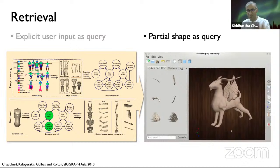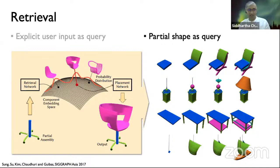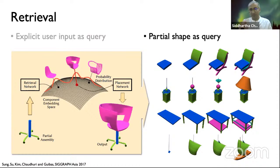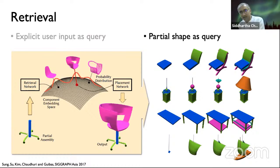In fairly recent work at SIGGRAPH Asia 2017, we took this one step further, working with a dataset where parts are not labeled. A neural network does part retrieval by taking a partial assembly as input — this retrieval network maps the partial assembly to a distribution over unlabeled parts in the collection, peaking at parts that are good fits. There's also a separate placement network that puts the part in the appropriate place. This allows generating construction sequences: each row is a construction sequence where you start with one part and the network iteratively suggests a single part to add until you have a complete shape — completely automatic constructions driven by the network.